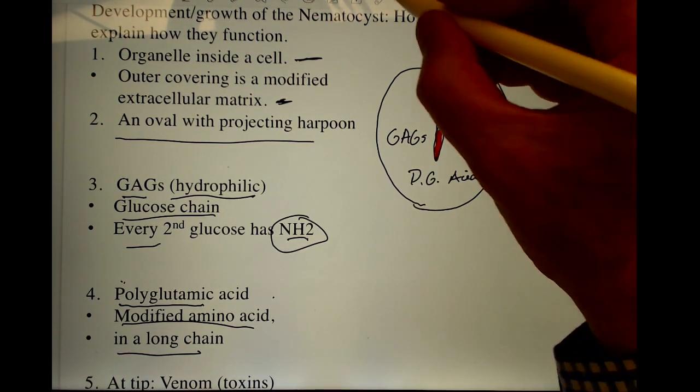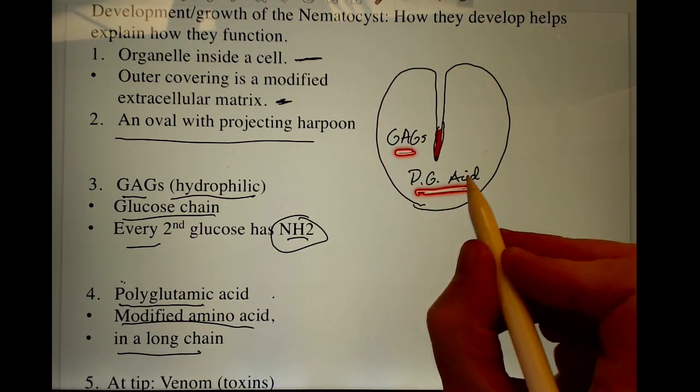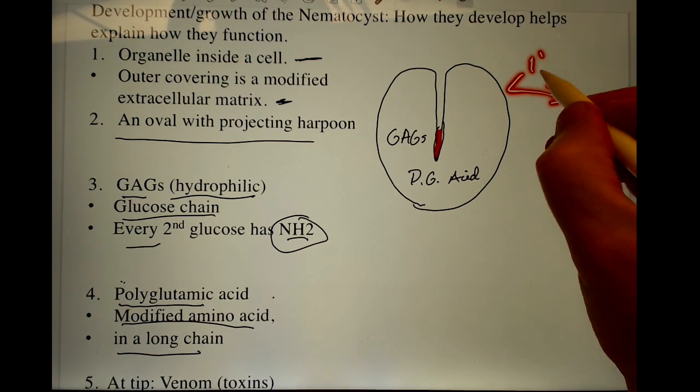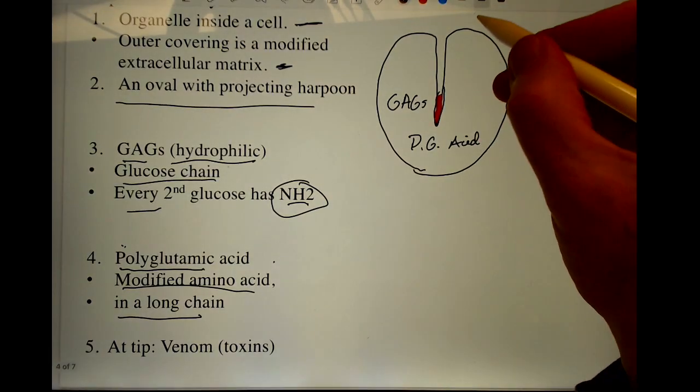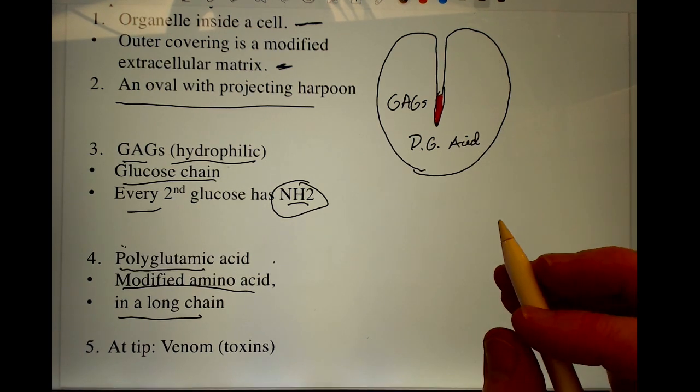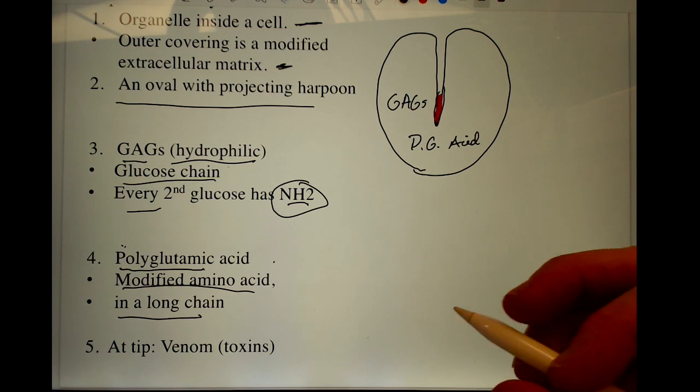When the nematocyst is just sitting here, water can't get in. So all these are water-attractive molecules, but water can't get in. When the nematocyst is triggered, it allows water to come in. Could be through aquaporins. Could be that little cap that you saw moving aside allows water in.